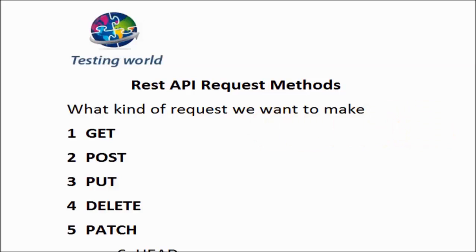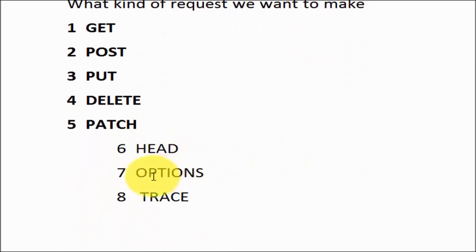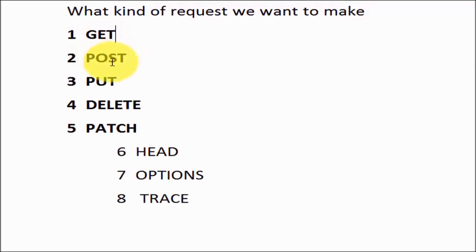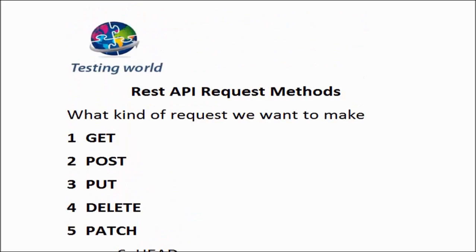We have a few common types of methods: GET, POST, PUT, DELETE, and PATCH. A few more are HEAD, OPTIONS, and TRACE. The ones we are going to use very commonly are GET, POST, PUT, DELETE, and PATCH. HEAD, OPTIONS, and TRACE are available but used very rarely. I am going to explain each method and in which case we need to use it.